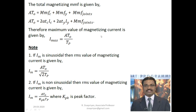From the total magnetizing MMF AT0, we can calculate the maximum value of the magnetizing current. Since the no-load current flows only in the primary winding, we divide AT0 by TP (the number of primary turns). So the maximum value of the magnetizing current is: IM_max = AT0 / TP.